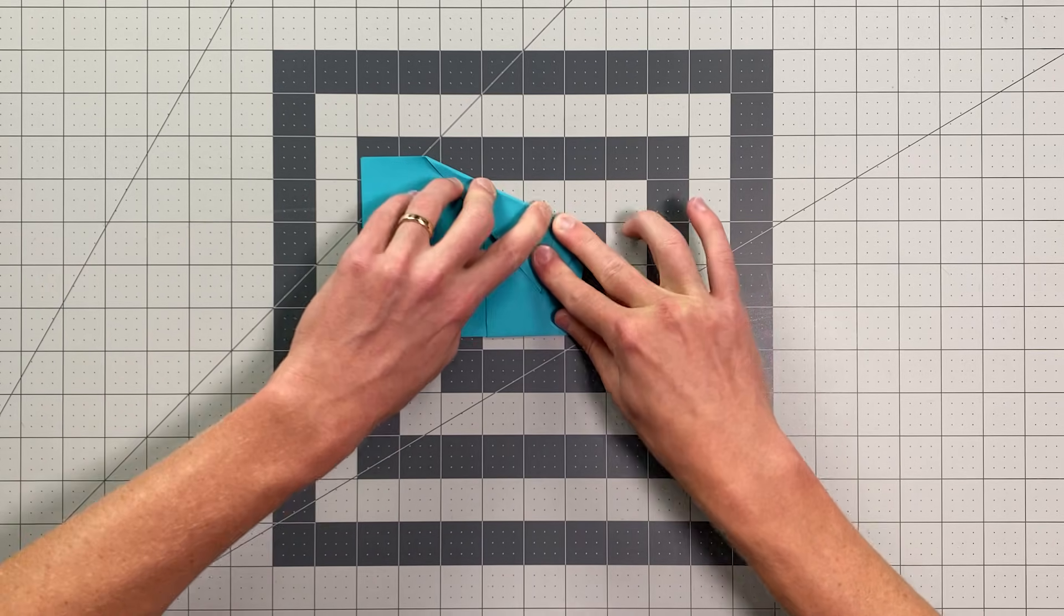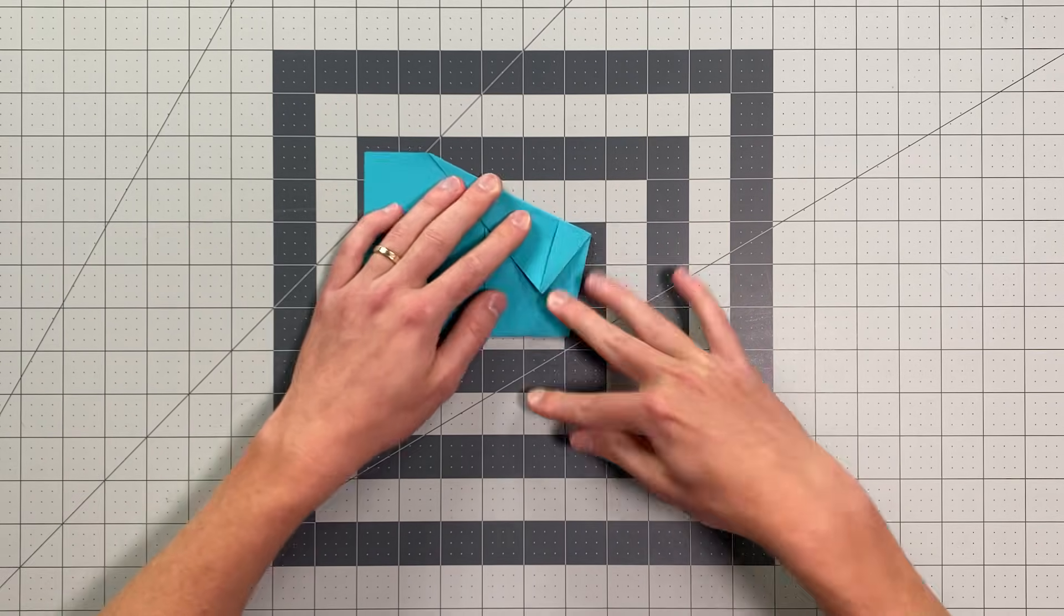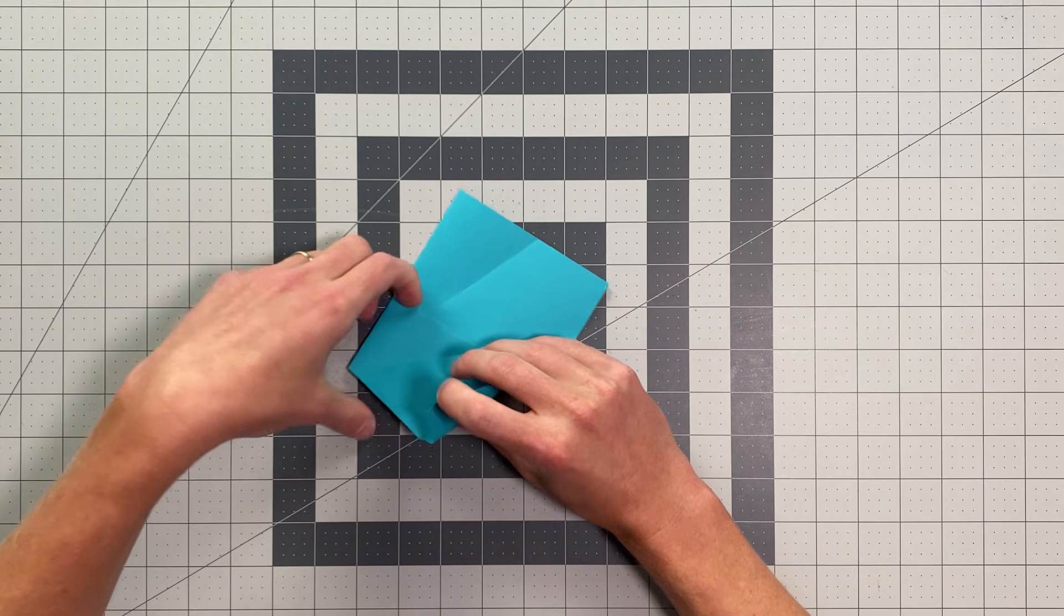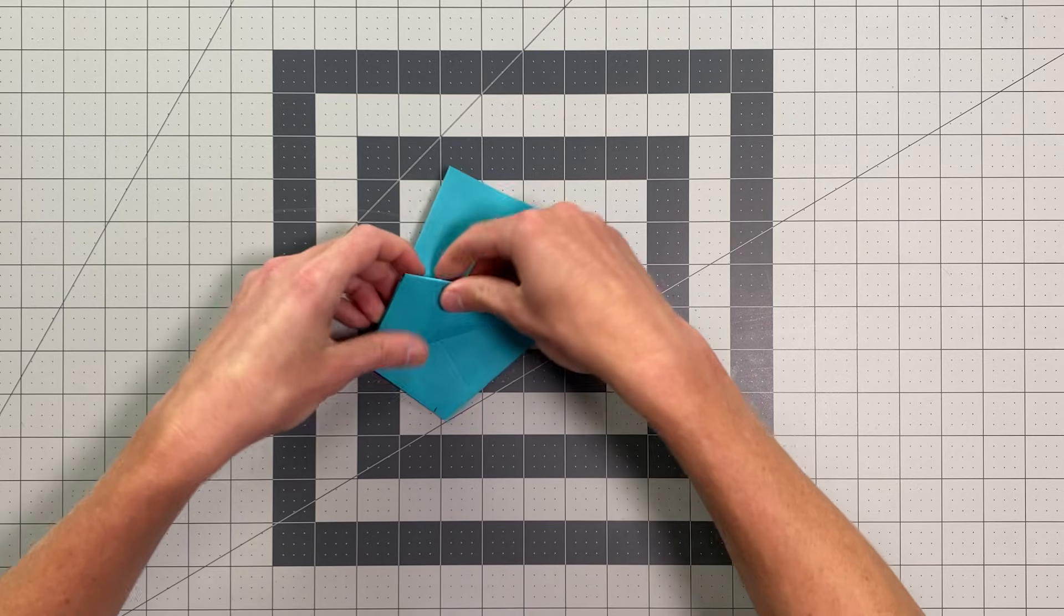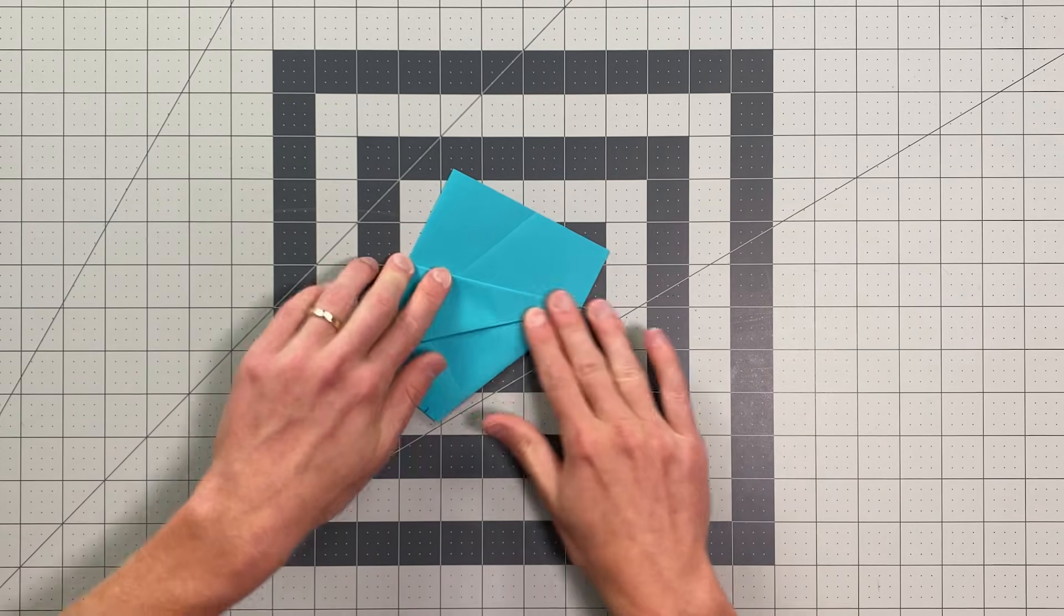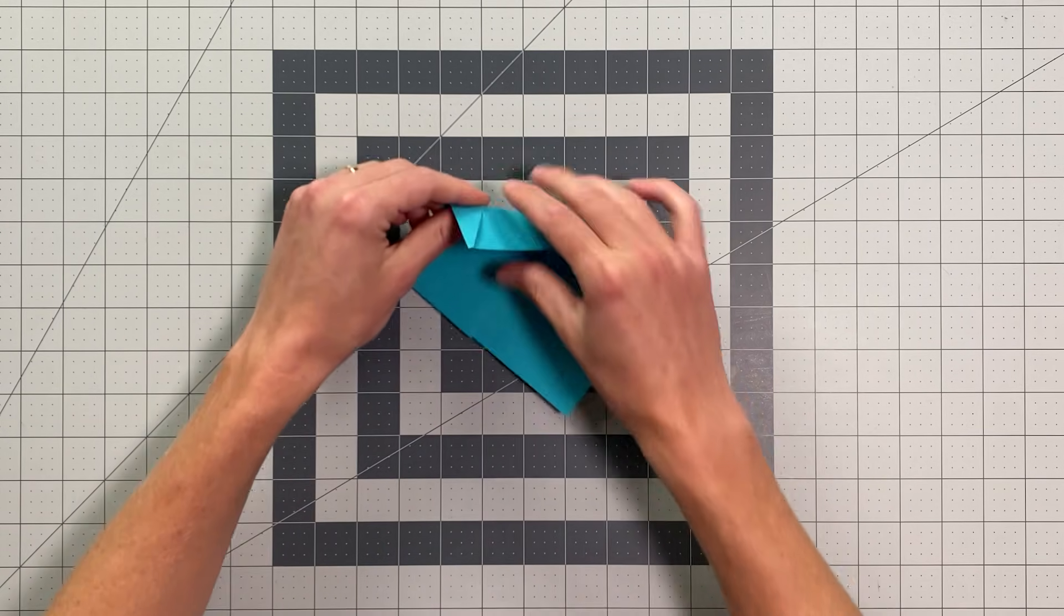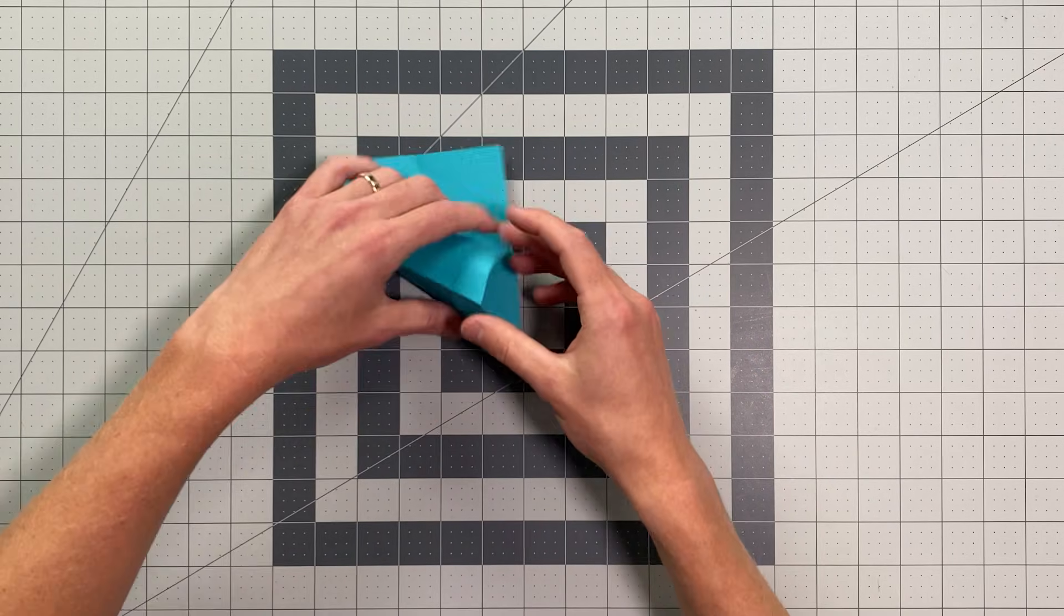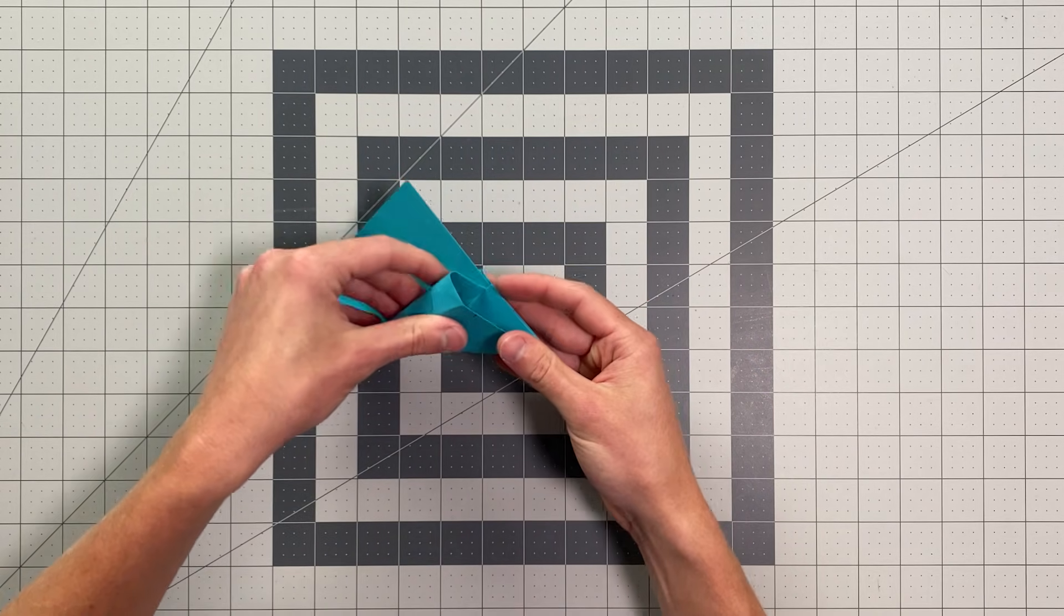And then the idea is that we're going to be tucking these tabs behind the pocket we have. So I'm going to kind of curl this just a little bit and open that up and swing that in behind, just like that. And I'll flip it over, do the same thing on this side. Swinging this in behind the other layers.